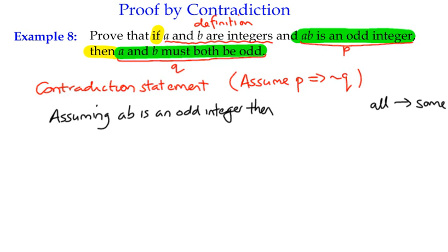So it does sometimes take a bit of writing out. Assuming AB is an odd integer, then at least one of A or B must be odd. So they could both be odd, or one of them must be odd. And that's our contradiction statement.